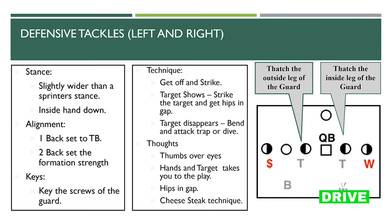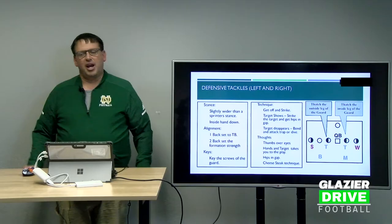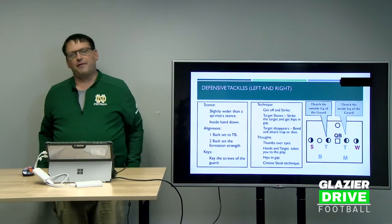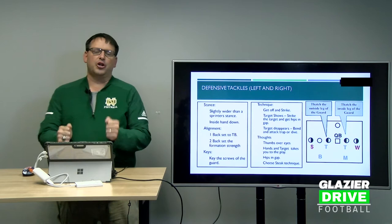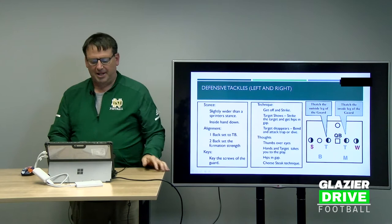The first thing we're going to talk about is the alignment of our tackles. Our tackles use a slightly wider than sprinter's stance and play with the inside hand down. In a one-back set, we set them to the tailback; in a two-back set, we set them to formation strength. We key the screws of the guard. We want to get off and strike. For our maximum minimums: if the target shows, we strike and get our hips in the gap; if the target disappears, we bend. We play with thumbs over our eyes — hands and target take you to the play. Keep hips back to avoid body-to-body contact.